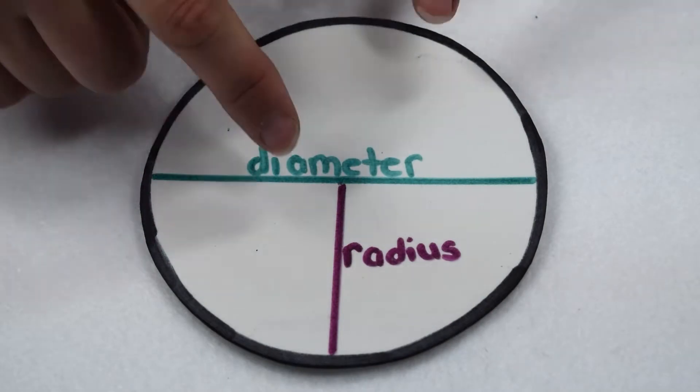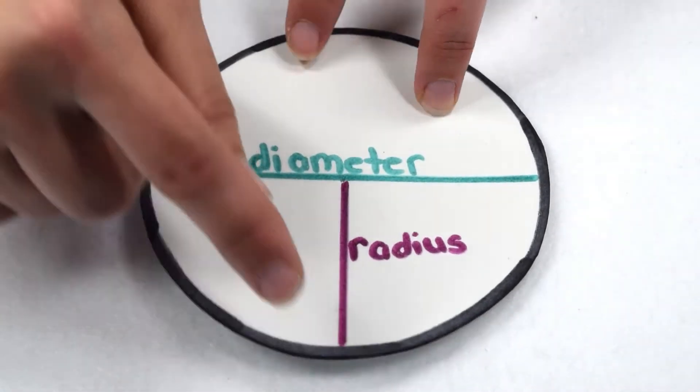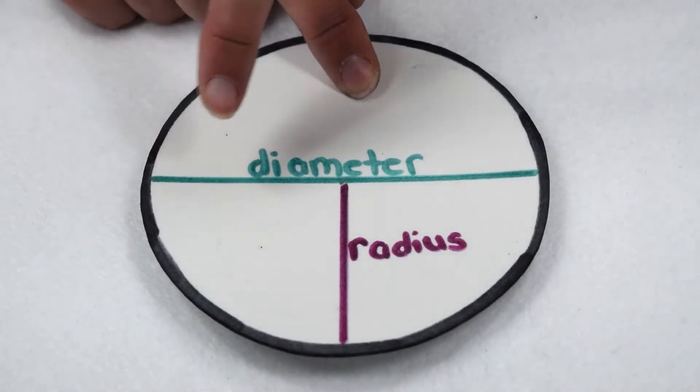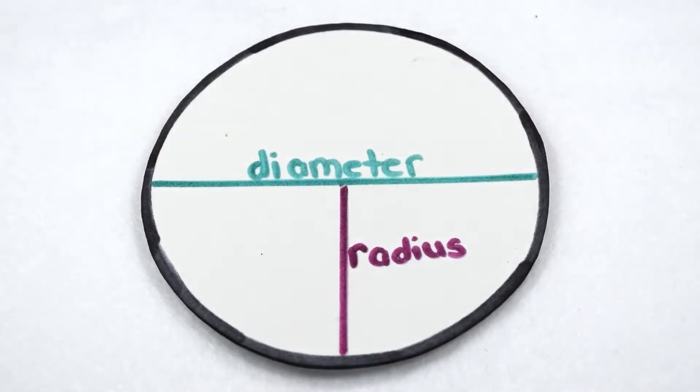We know that the radius of a circle is the distance from the center of the circle to the outside edge. We also know the diameter of the circle is the distance from one edge through the center to the opposite edge of the circle.